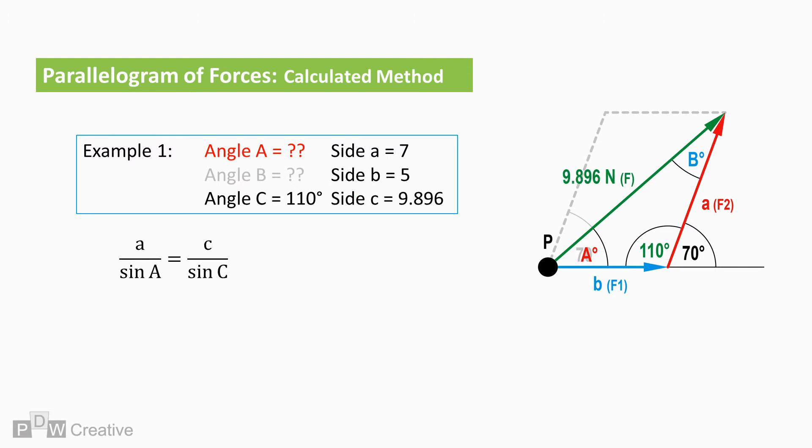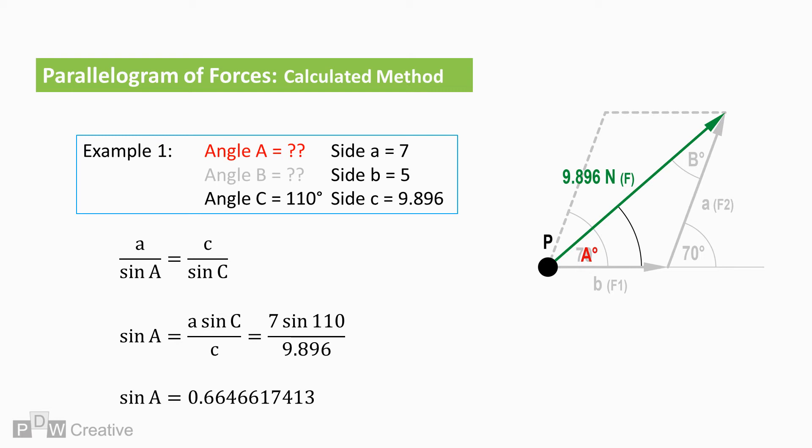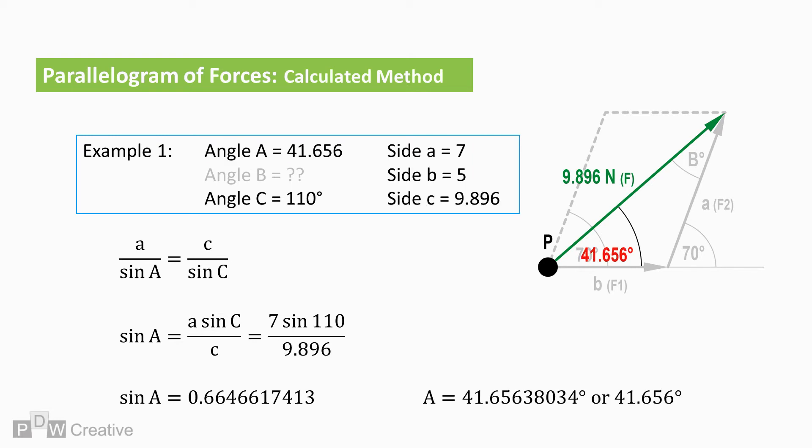The angle of resultant action can now be calculated from the sine rule. Side and angle A equals side and angle C, from which sine angle A equals side A times sine angle C over side C. The inverse sine of which gives an angle of 41.65 degrees.